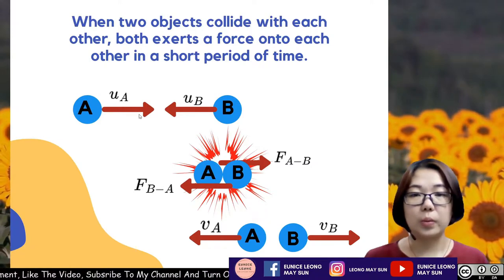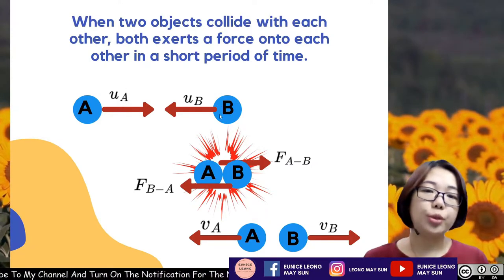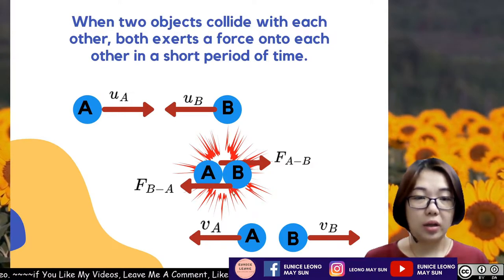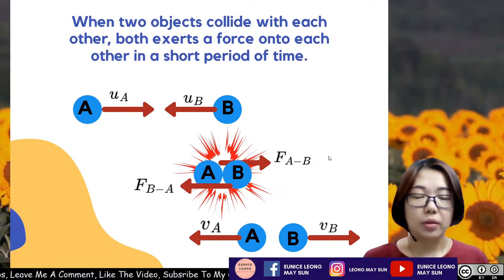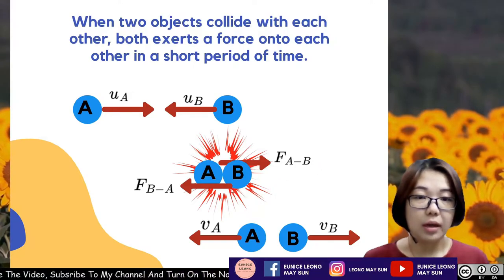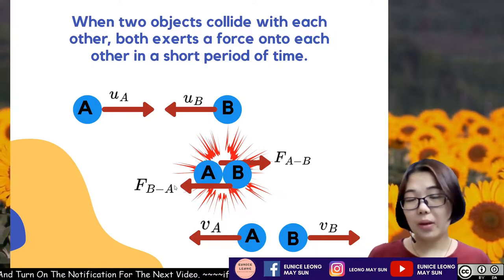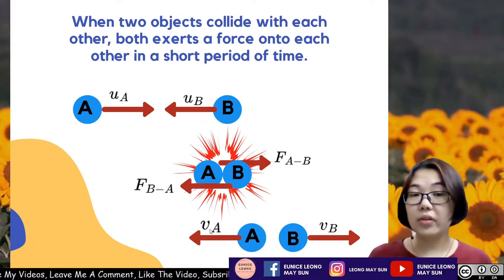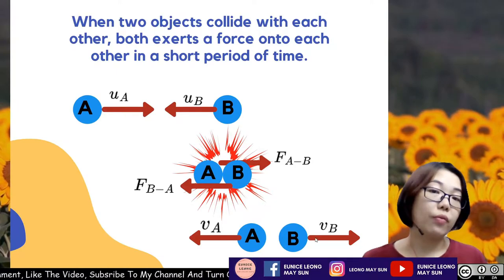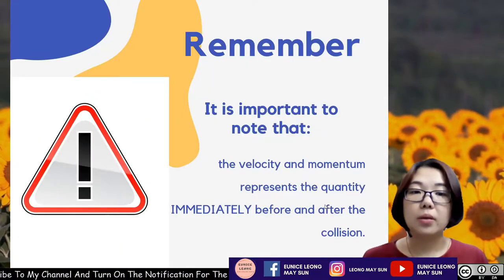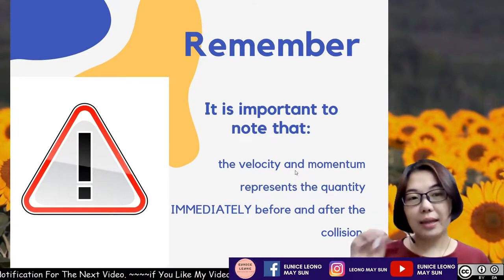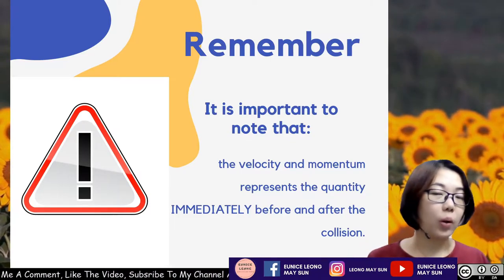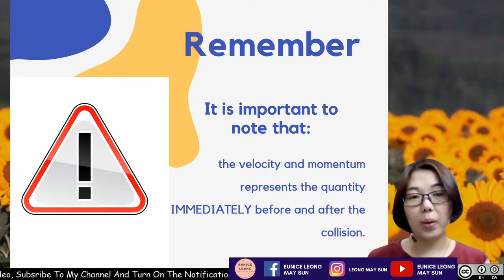Let's say object A is moving towards the right with initial velocity Ua, and object B is moving towards the left with initial velocity Ub. During the interaction or collision, A exerts a force onto B labeled F_A-to-B, and B will exert an equal magnitude, opposite direction force from B towards A. After that, A will move with its own velocity Va and B will also move with its own velocity Vb. The velocity and momentum represent the quantity immediately before and after the collision — not long before or long after, but immediately before and after.